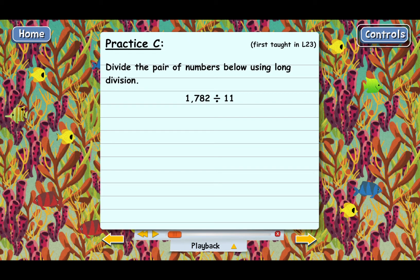The first step in doing this division is to put 1,782 inside the division box, and 11 goes on the outside. Notice the divisor 11 has two digits, so this is a little bit tougher long division problem.